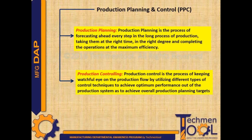Production control is the process of keeping a watchful eye on the production flow by utilizing different types of control techniques to achieve optimum performance out of the production system, so as to achieve overall production planning targets. PPC thus does both planning and controlling activities to achieve planned targets.